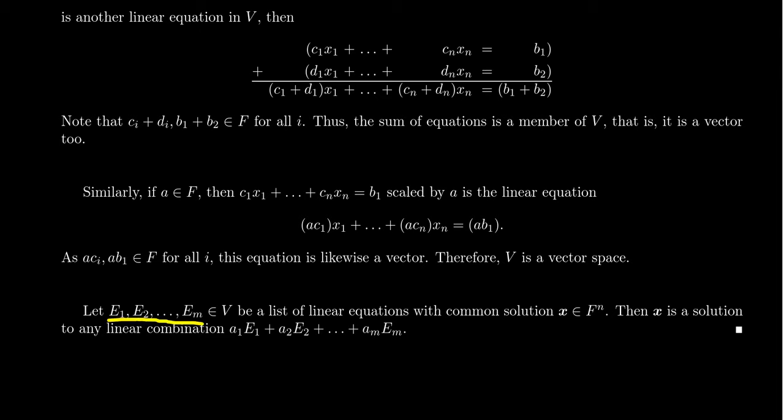If they have a common solution x, which x would be a vector living inside of F^n—remember F^n is the set of column vectors with n entries—if x is a common solution to these equations, then x will also be a solution to any linear combination of these equations right here.